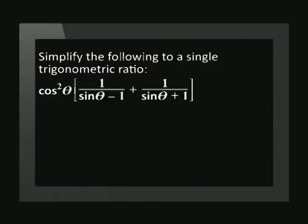In a typical exam question, we will be asked to use these identities to either simplify an expression or to solve an equation. Let's practice these skills together. Simplify the following to a single trigonometric ratio: cos squared theta times open brackets (1 over sin theta minus 1) plus (1 over sin theta plus 1) close brackets. There will be more than one way to do this, depending on your approach. I am going to start by creating one denominator inside the bracket.